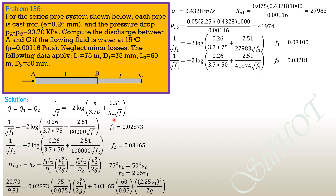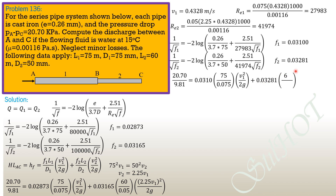Substituting 20.7 over 9.81 equals 0.03116 times 75 over 0.075 times V1²/2g, plus 0.03281 times 60 over 0.05 times (2.25 V1)²/2g. The new velocity V1 is 0.42397 m/s. This is now the refined value, and we can finalize the discharge.